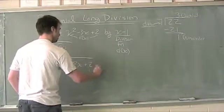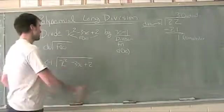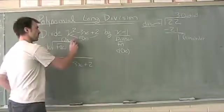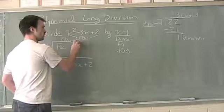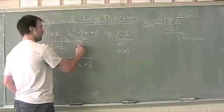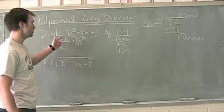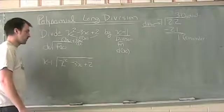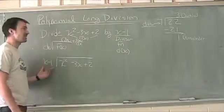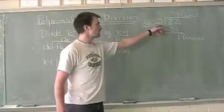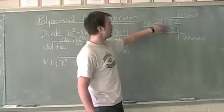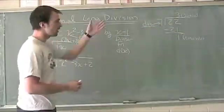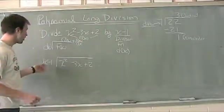We're going to find a quotient function q of x and a remainder function r of x, which we divide again by our divisor d of x. The answer will be q of x plus r of x divided by d of x. We approach this the same way we did long division—we ask what times 7 gives me 22 or brings me close to 22.